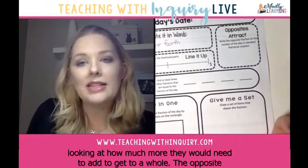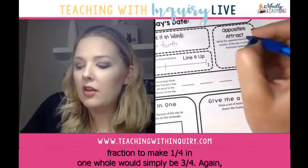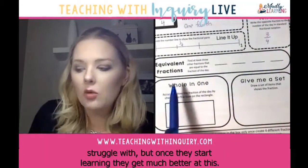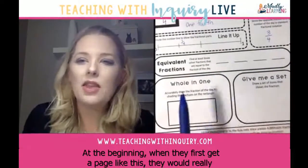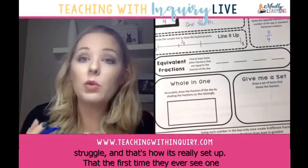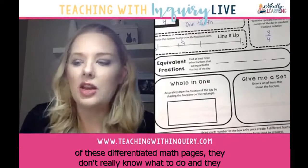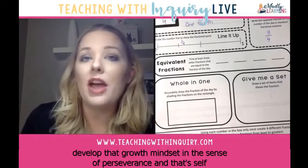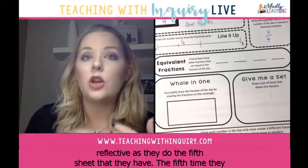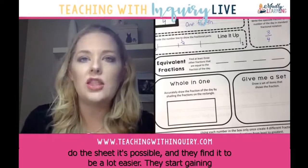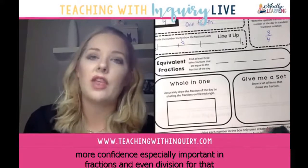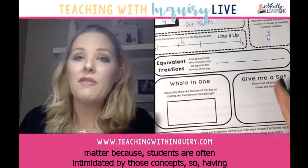Another expectation is looking at how much more you'd need to add to get to a whole — so the complement of one-fourth is three-fourths. Students initially struggle with equivalent fractions, but once they start learning they get much better. By the fifth time they do this sheet they find it much easier and start gaining confidence, which is especially important in fractions and division because students are often really intimidated by those concepts.